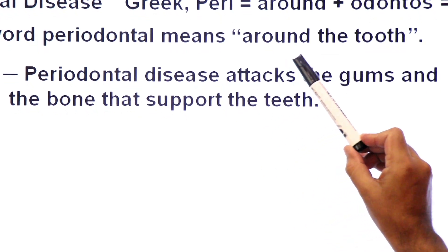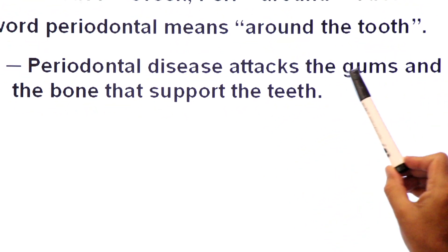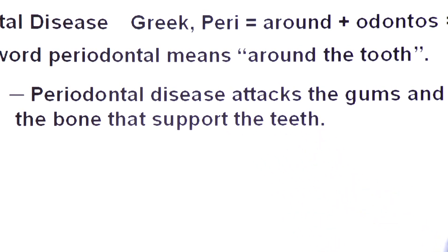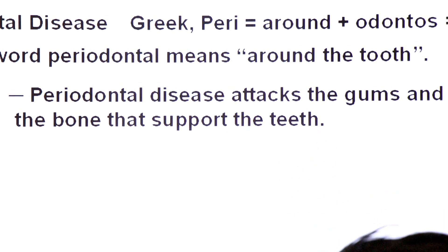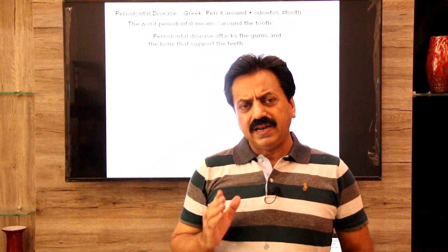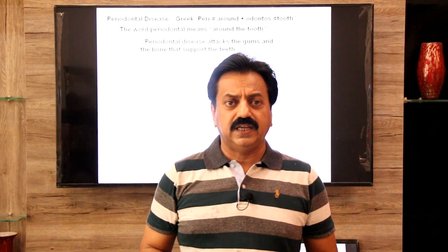Now, what is periodontal disease? Periodontal disease attacks the gums and the bone that support the teeth. This is a progressive disease in which first the gums are affected, and then the bones that support the teeth are damaged and destroyed.